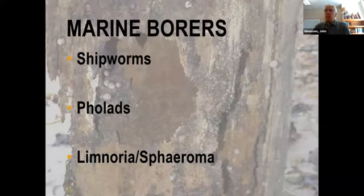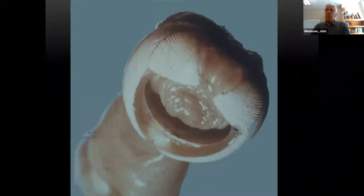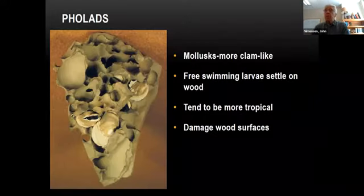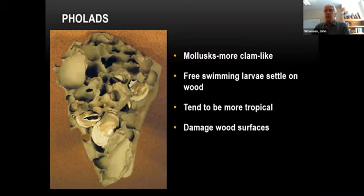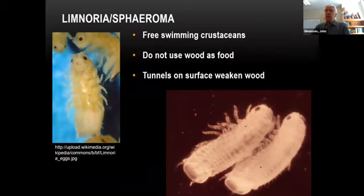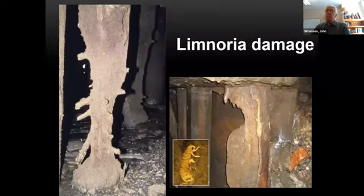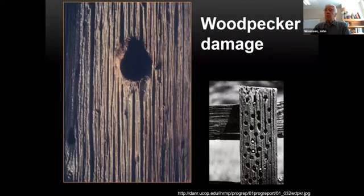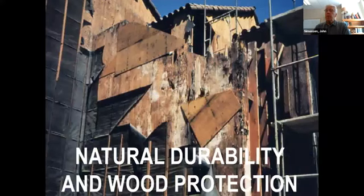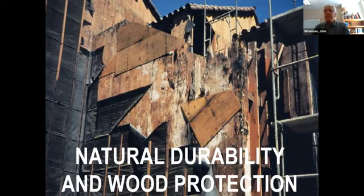We talked about marine borers and the three different kinds: shipworms, folads, and the noria. Shipworms are the most destructive and can really do a job on wood in a marine environment. The folads are more like mollusks and damage the wood only on the surface — they just drill in far enough to feel protected. The noria also tunnels into wood as a place to live, not as food. Shipworms actually use the wood as food.